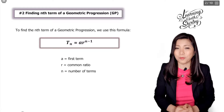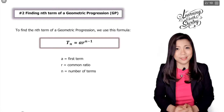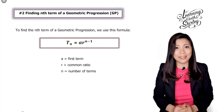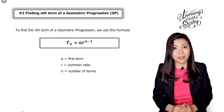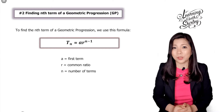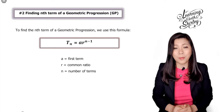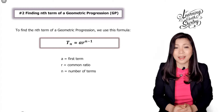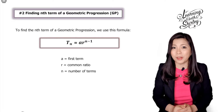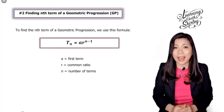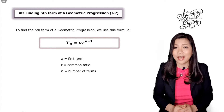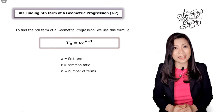To find the nth term of a geometric progression, we use the formula: tn equals a times r to the power of n minus 1, where a stands for the first term, r stands for the common ratio, and n stands for the number of terms. Let's look at the following example.